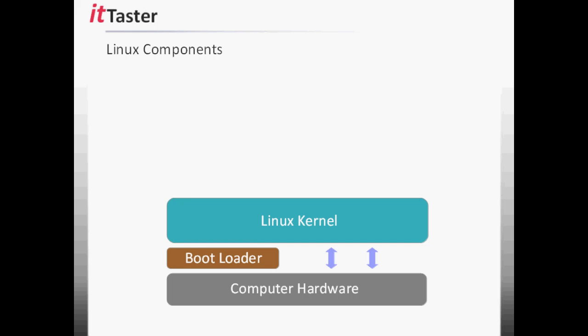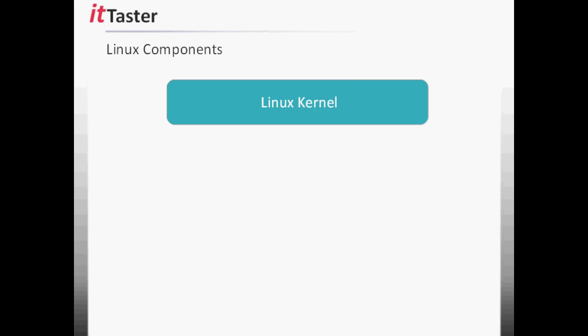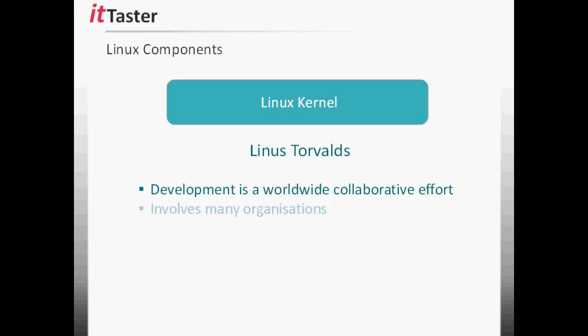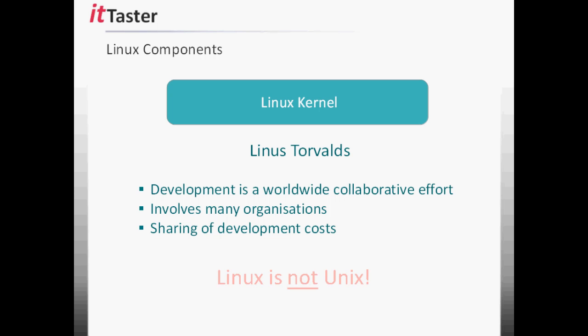The next component is the Linux kernel — the very core of the Linux operating system. It manages the CPU, memory, processes and peripheral devices needed to run the computer. The Linux kernel was written from scratch by Finnish computer scientist Linus Torvalds, and the Linux operating system was first released in the early 1990s. Linux development today is a huge worldwide collaborative effort involving many organisations who share the development costs. One thing to be aware of is that although Linux appears similar to the Unix operating system, Linux is not Unix.